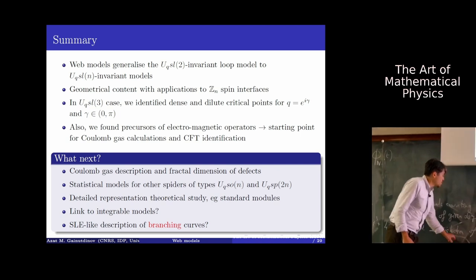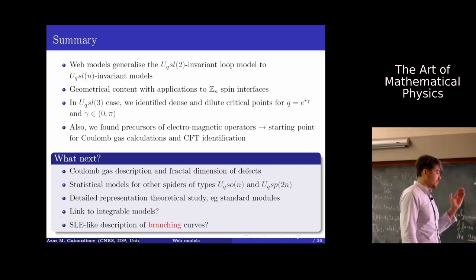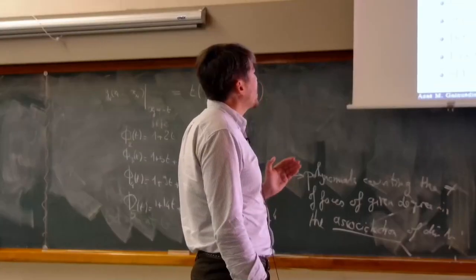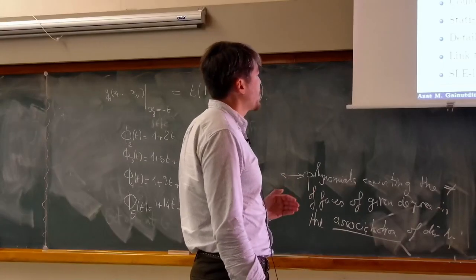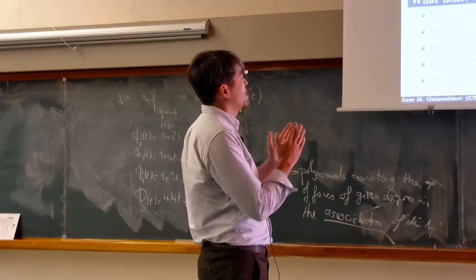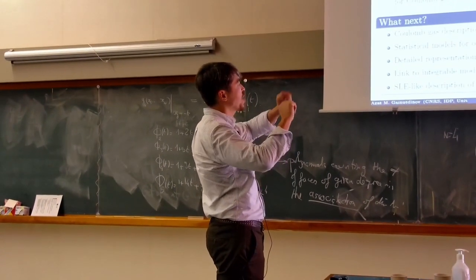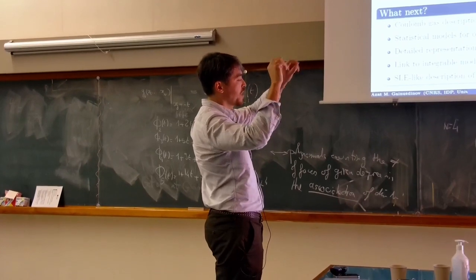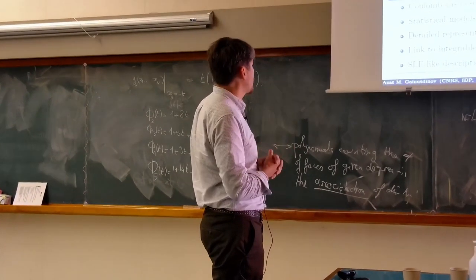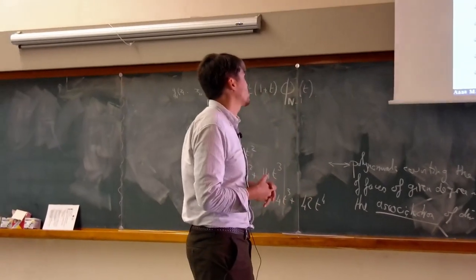Now instead of Brownian motion — a random curve — we have curves with branchings. The stochastic process at some point can produce a branching, giving rise to two stochastic processes, and then again branchings. This type of problem might be very interesting for people working on SLE.